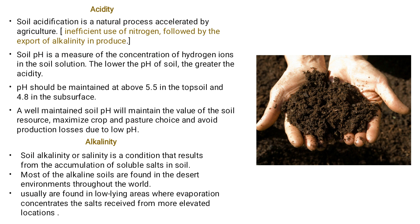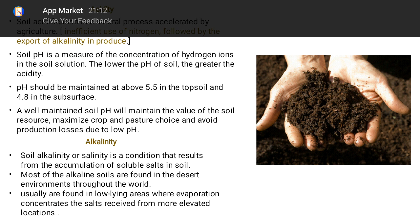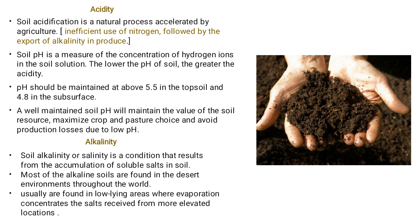Similarly, soil alkalinity or salinity is a condition that results from the accumulation of soluble salts in the soil. In the hydrological cycle, there will be floods or surface runoff and movement of water. After that, water will evaporate, leaving behind some soluble contents, causing redistribution of nutrients and altering the pH value of the soil. Most alkaline soils are found in desert environments throughout the world, and they are usually found in low-lying areas where evaporation concentrates the salts received from more elevated locations.